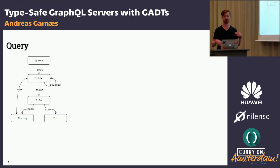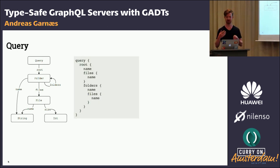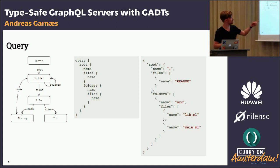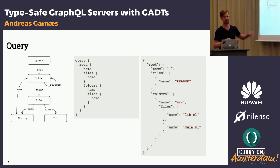We need to be able to query this graph structure. A GraphQL query is basically specifying how to traverse the graph. The names — roots, name, files, name — correspond to walking the edges of the graph. A response to a query like this might look like the JSON on the right, and you'll note that the shape of the response matches the shape of the query exactly — the property names in the JSON objects match exactly the names in the query.